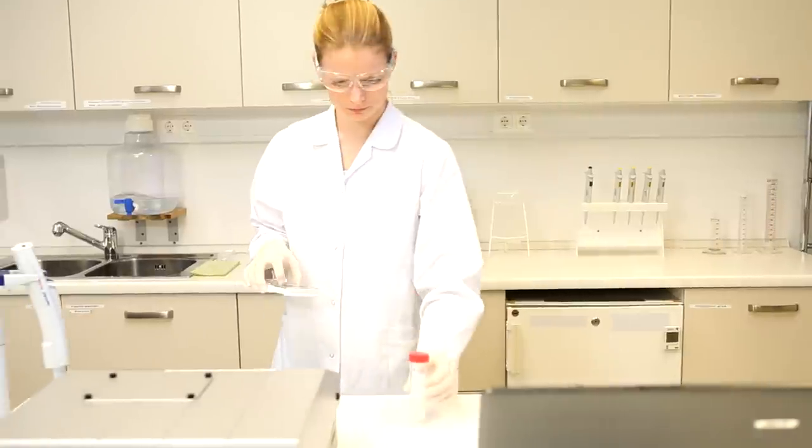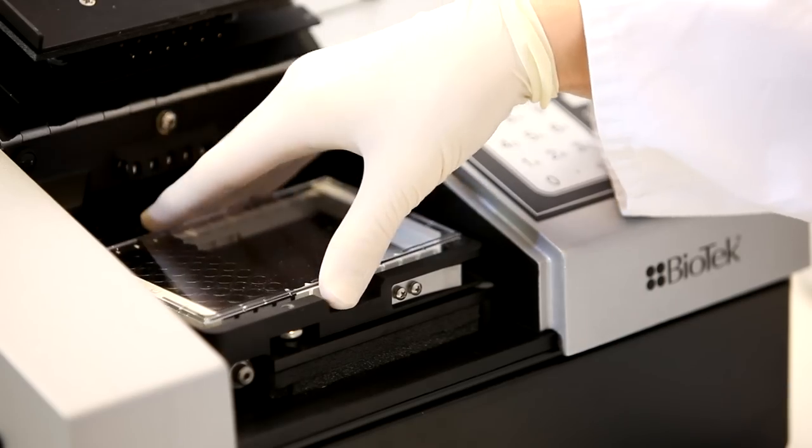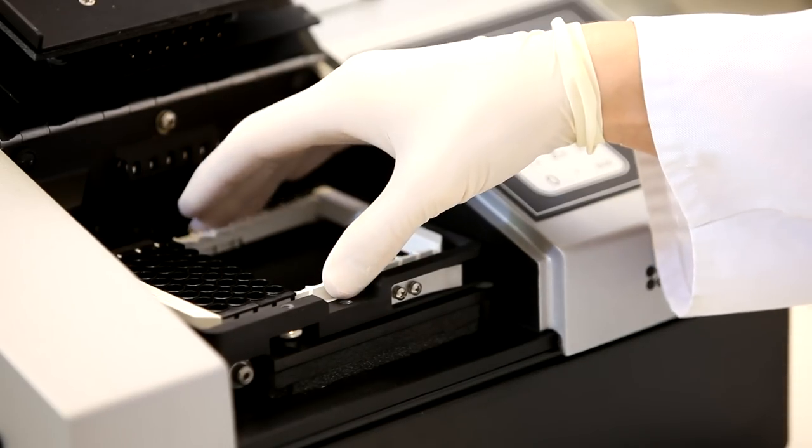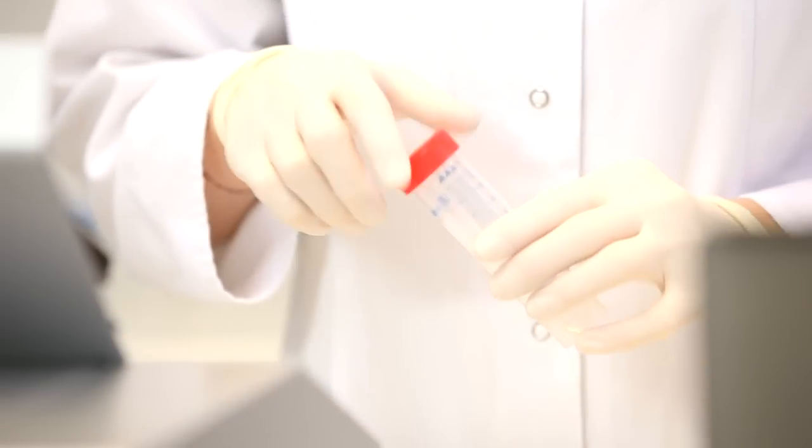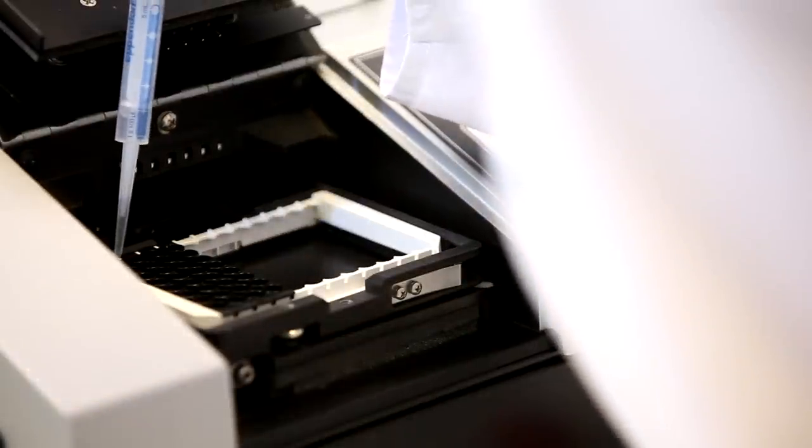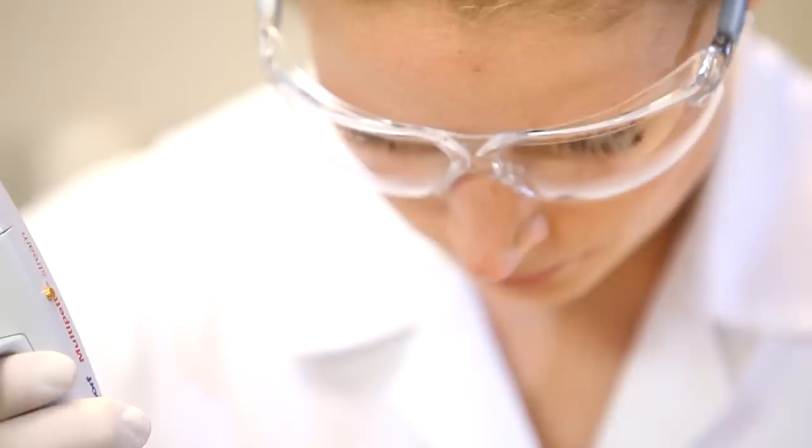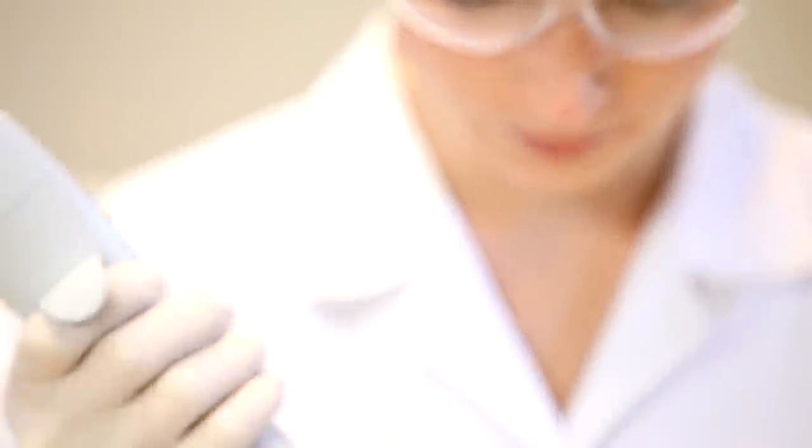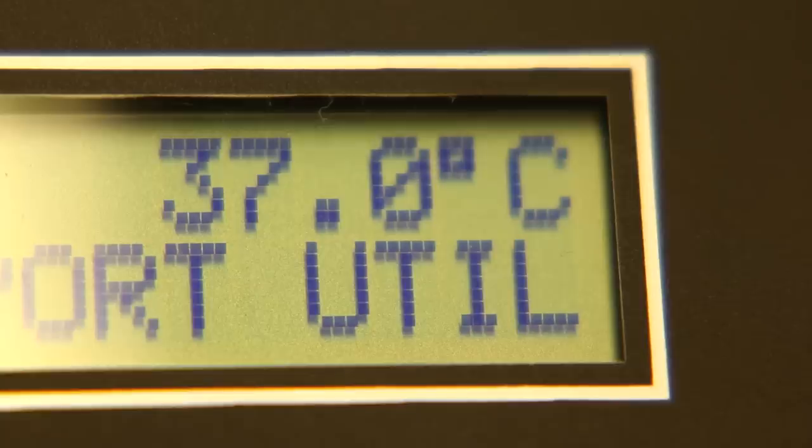Place the EndoLISA plate close to or directly in the fluorescent microplate reader. Add 100 microliters of assay reagent to each well. Close the reader and wait one minute in order to allow the temperature to adjust to 37 degrees Celsius.